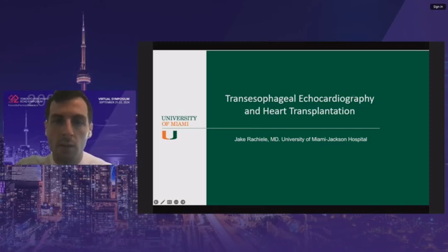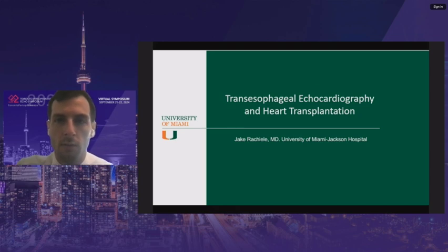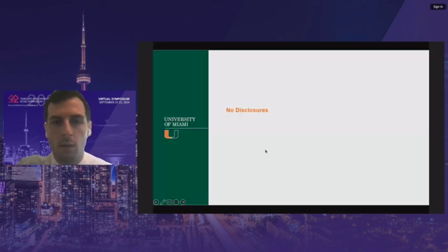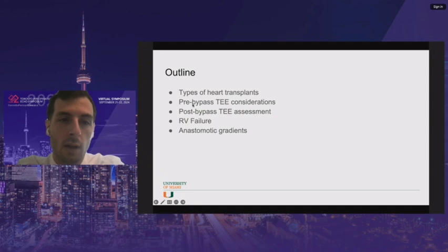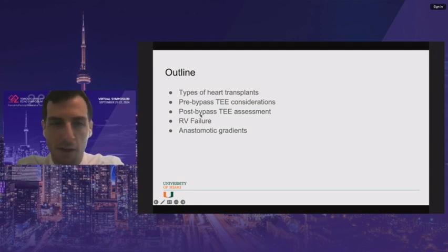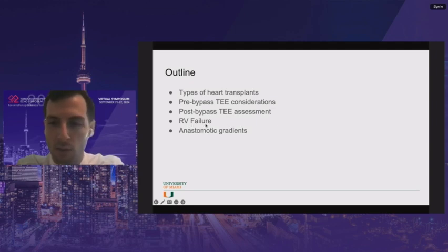We're going to talk about TEE in regards to heart transplantation. We'll cover the different types of heart transplants and why that's important, the pre and post assessments of the transplant, how to evaluate RV failure — we'll briefly touch on that — and how to look at all the anastomotic gradients depending on the type of transplant.